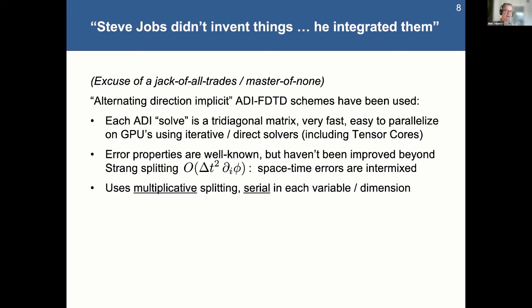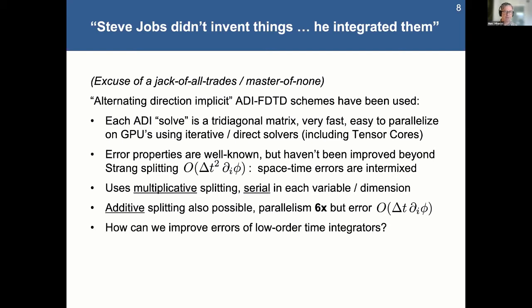So if you use that multiplicative splitting, it's also serial, right? You can't actually split it out in the different directions. Whereas if you use an additive splitting, you actually can get straight up a six times speed up, but you end up with a first-order method. So, you know, you might ask, how can we improve the errors of such a low order time integrator?